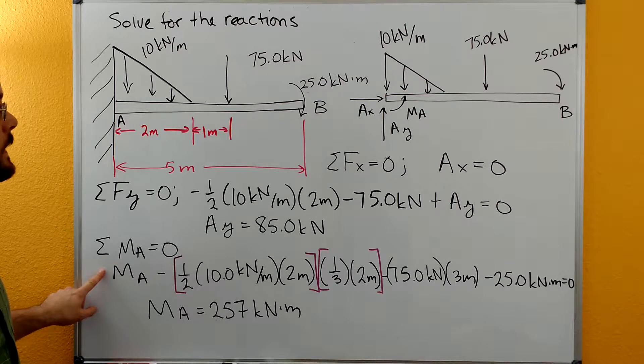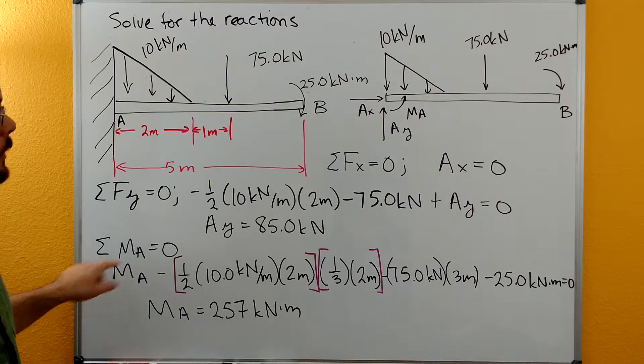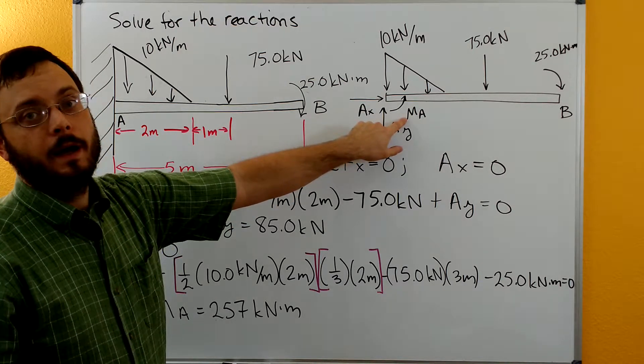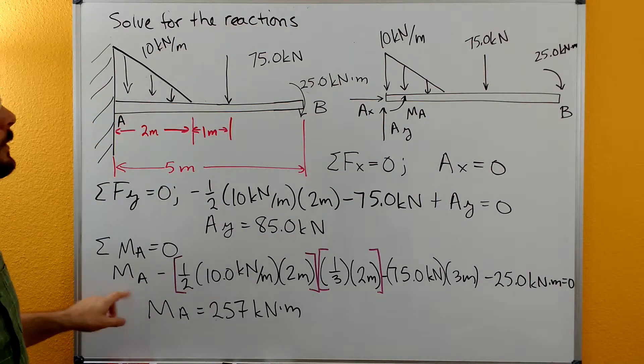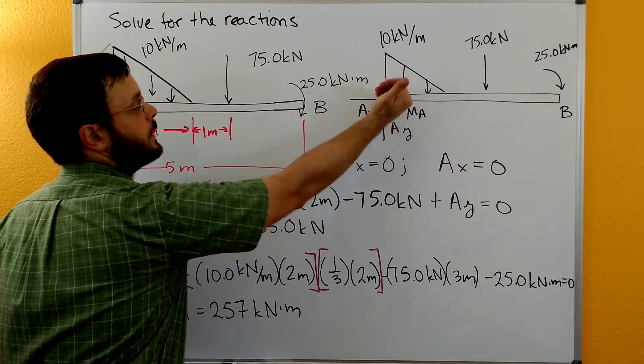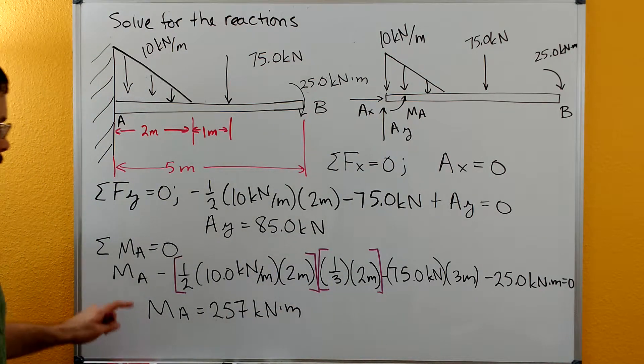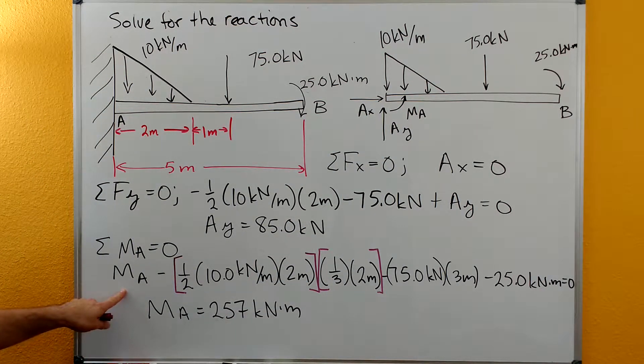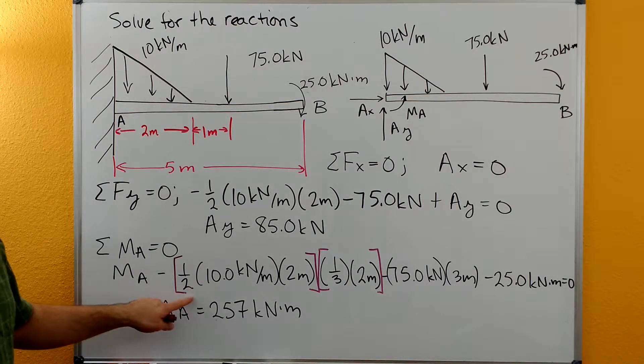And then we can do sum of moments about A. We have this MA from the support, so we need to add it in our equation. We give it a positive or counterclockwise sense, so it's going to be positive in our equation here.